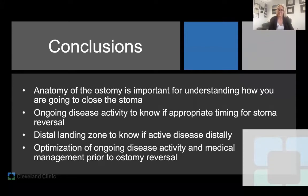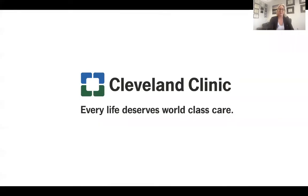In conclusion, reversing ileostomies and colostomies with issues specific to Crohn's disease requires: always understanding the anatomy of the stoma prior to closure — local stoma revision versus midline incision; assessing ongoing disease activity to determine if it's an appropriate time for reversal; addressing proximal disease at the same time if needed; evaluating the distal landing zone including perianal and anal canal involvement, rectal condition, and any existing anastomosis. And lastly, working with the gastroenterologist to understand ongoing disease activity and optimizing medical therapy. Thank you again for the opportunity, and I hope we'll all be in person for this meeting next year.